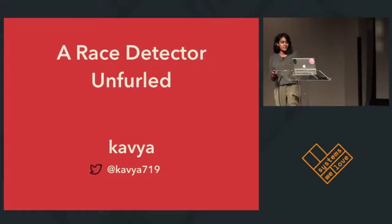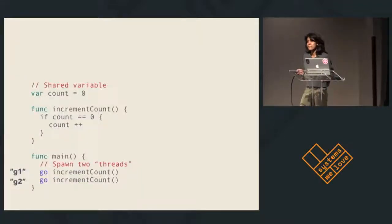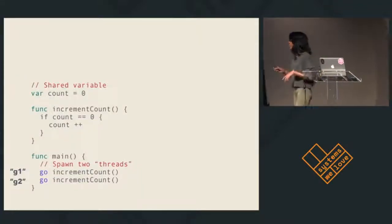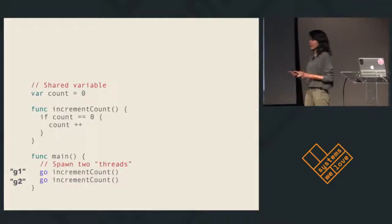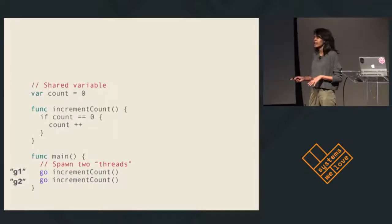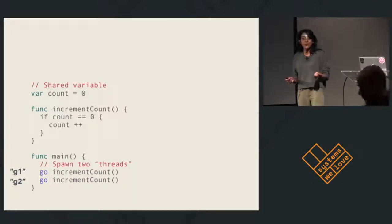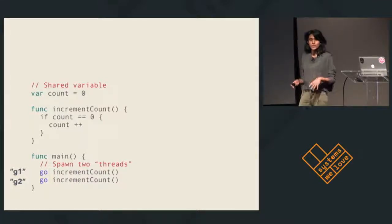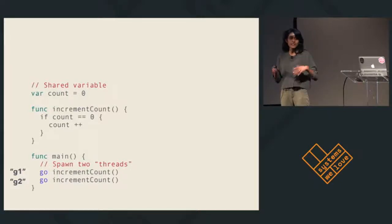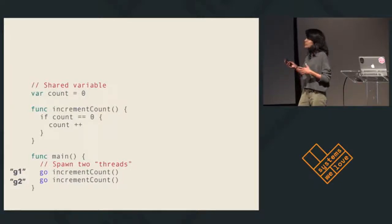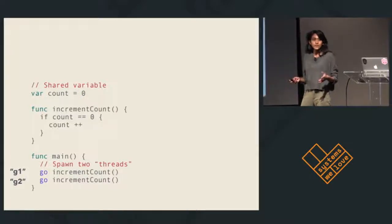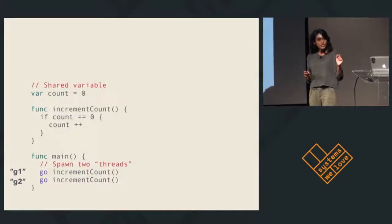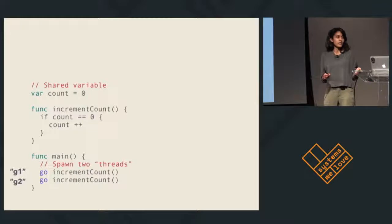To kick things off, let's do something that's especially fun: reason about concurrency. Here's a simple program. This is the example program we'll be using in the rest of the talk. All the program does is it spawns two threads. This is a Go program, so these are Go routines or user space threads, but these might as well be system threads in a program like Java. We spawn two threads. They both execute increment count, which reads a shared count variable, and if its value is zero, it increments it.